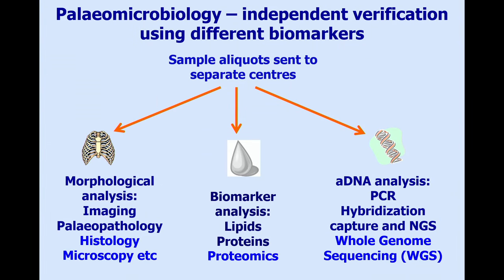Paleomicrobiology is the study of ancient microbial infections. Because we are surrounded by microorganisms in our modern environment, there is a great problem avoiding contamination when looking for old microorganisms, so we try to use more than one method of detecting them. Methods include morphological analysis, imaging such as radiographs and CT scans — though micro-CT scans destroy ancient DNA — and histology, where you look at sections under the microscope and can sometimes find direct evidence of microorganisms in tissues that shouldn't have them.